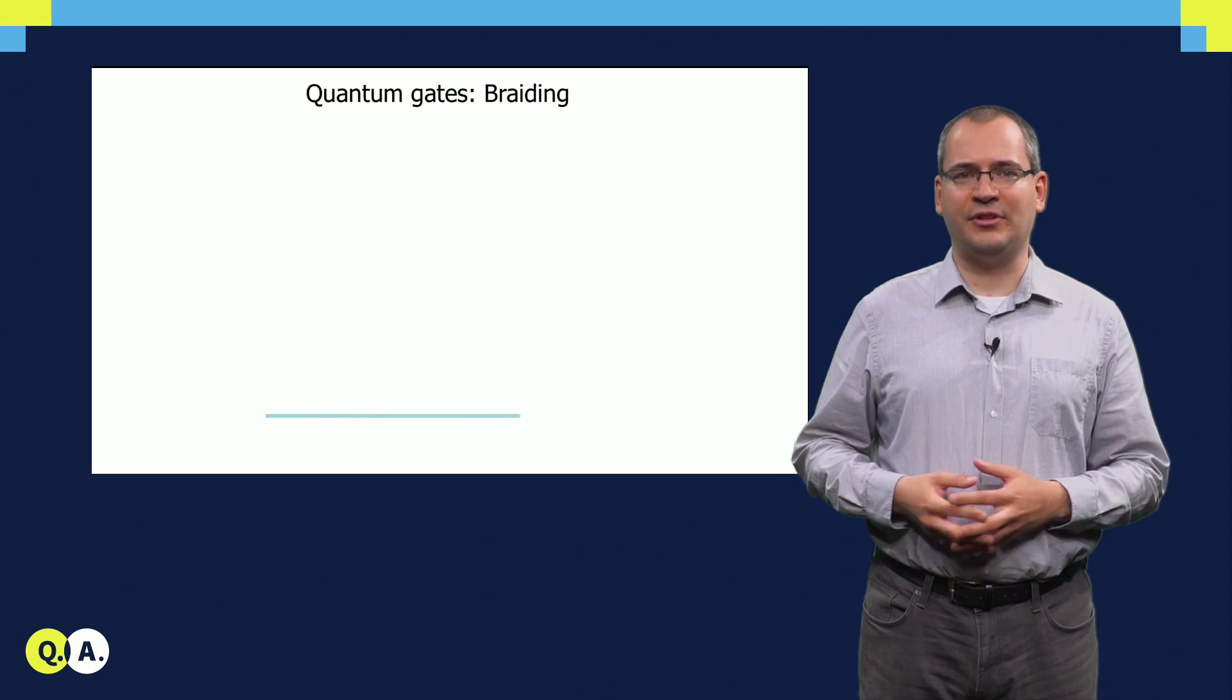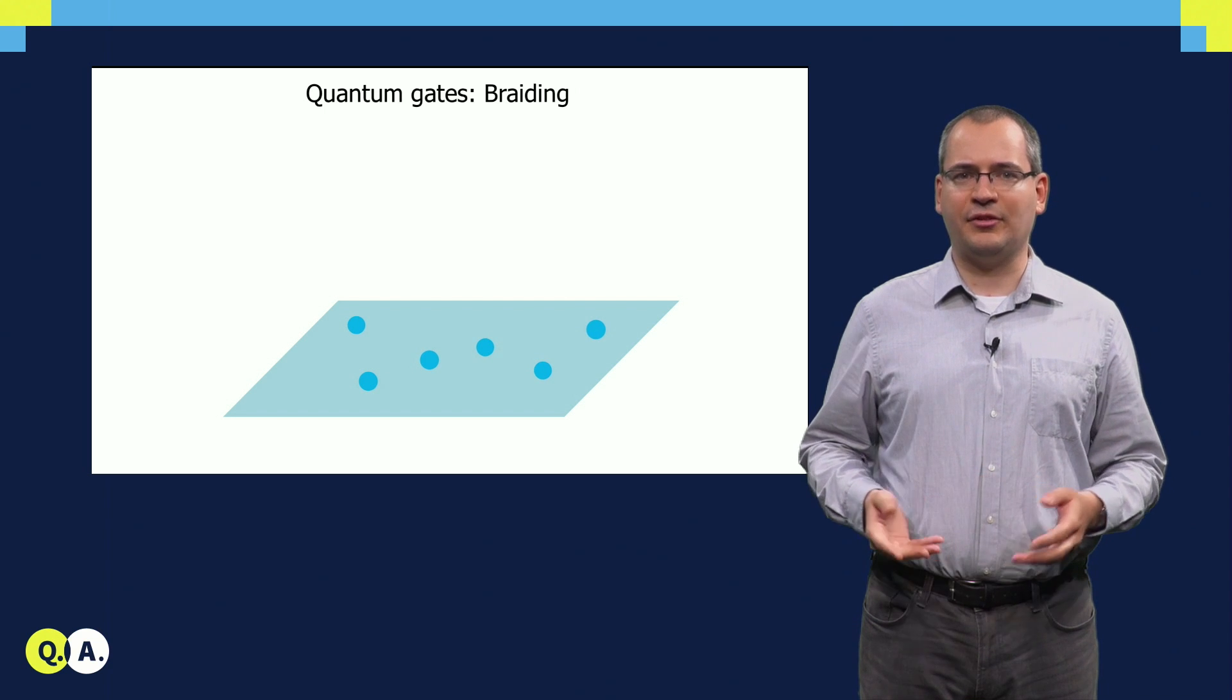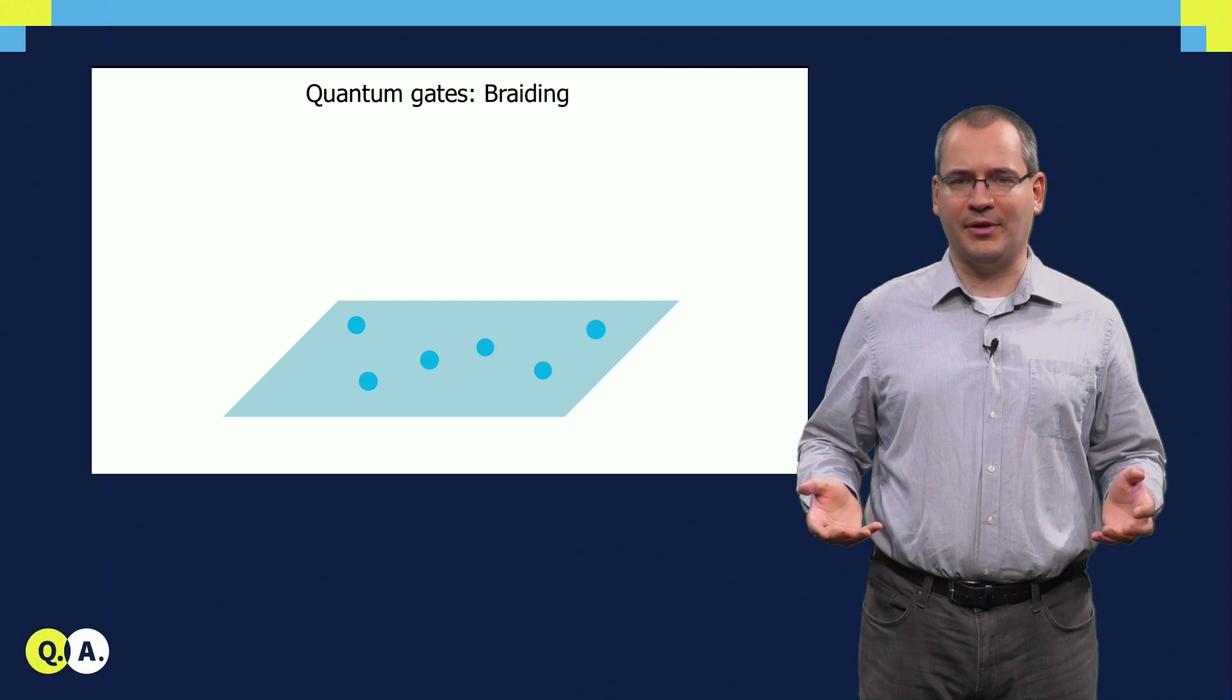The quantum gates, the unitary operations, are linked to the exchange of these anyons. As we discussed in the previous video, we need the non-abelian property of the anyons to perform quantum gates.